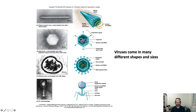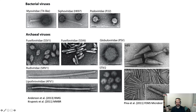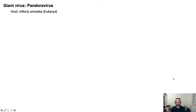A little more on viral diversity: I was focusing on genomes before, but viruses also come in many different shapes and sizes. They come in long rods, spheres, geometric shapes, and these moonlander machine-like structures. These are bacterial and archaeoviruses. Some bacterial viruses have long filaments. The archaeoviruses are especially weird — you've got lemon-shaped viruses, champagne bottles with antennae, super long filaments, and nicely geometric shapes. Lots and lots of different shapes.